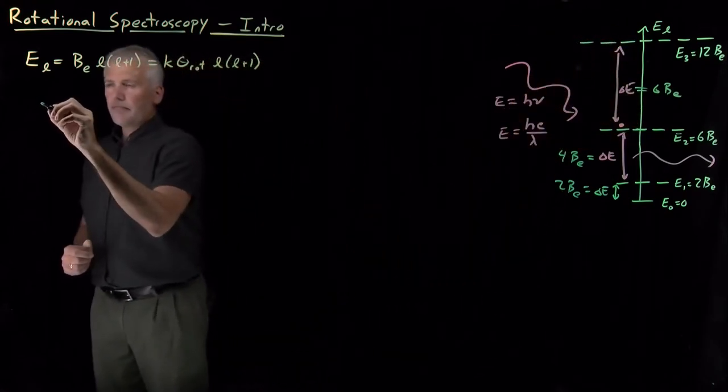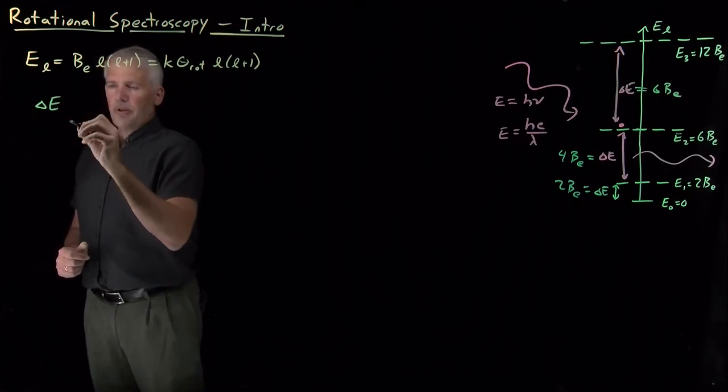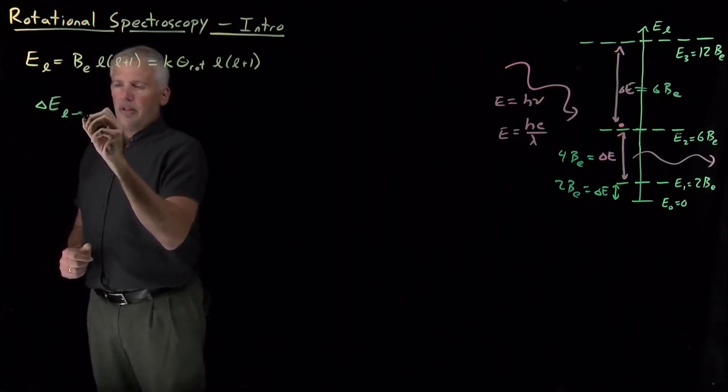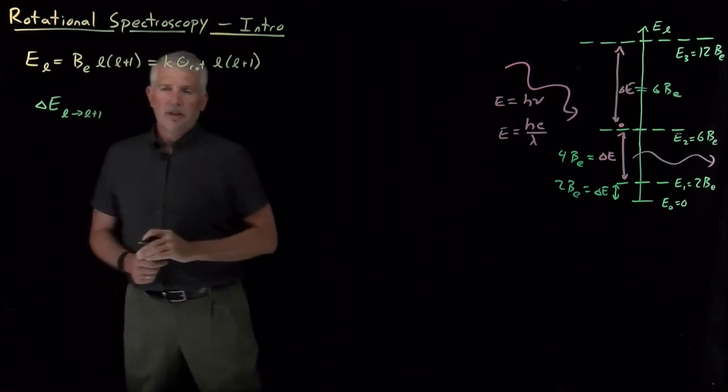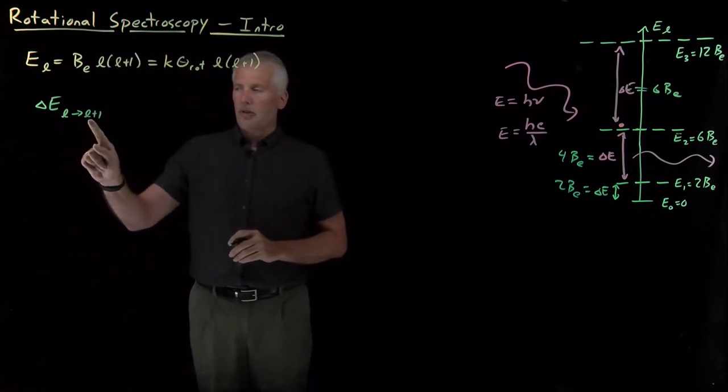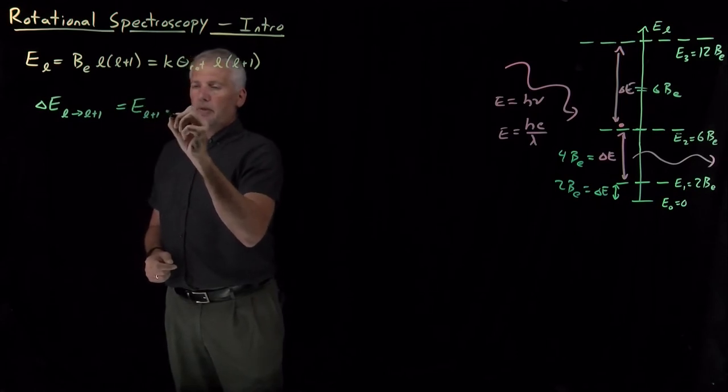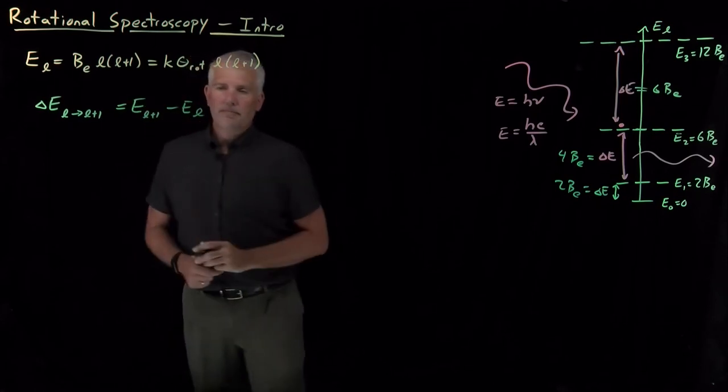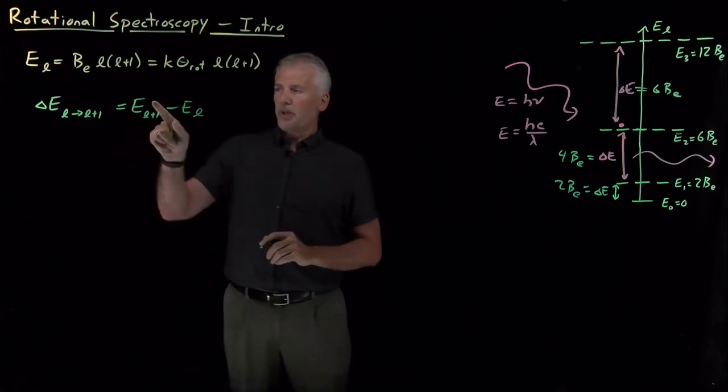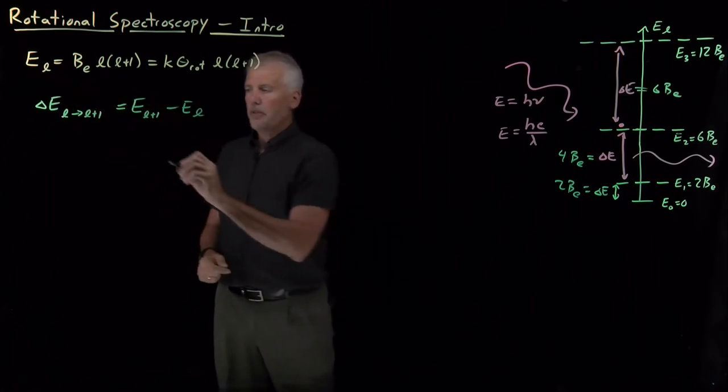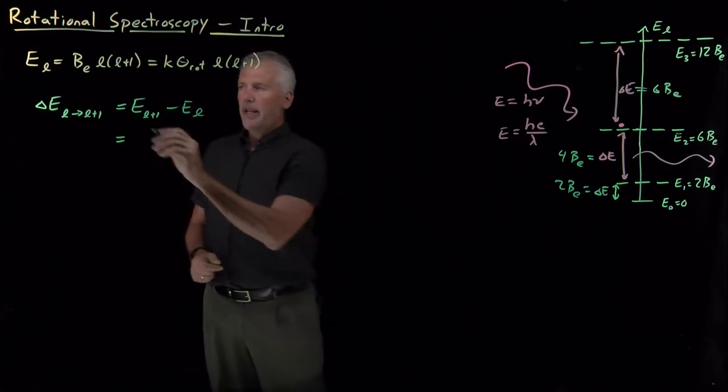And in general, if I want to know, let's say, for the L to L+1 transition, the gap between the Lth energy level and the L+1 energy level, that's going to be the energy of the upper level minus the energy of the lower level.